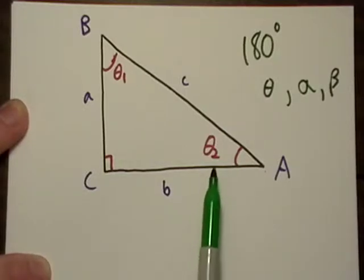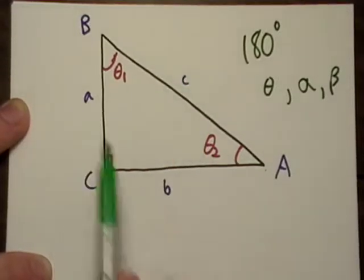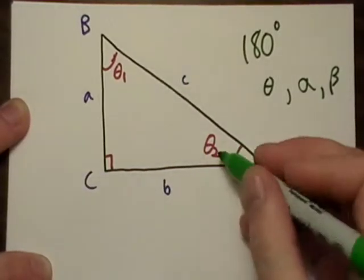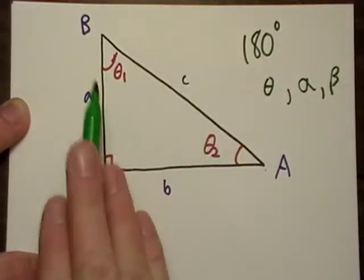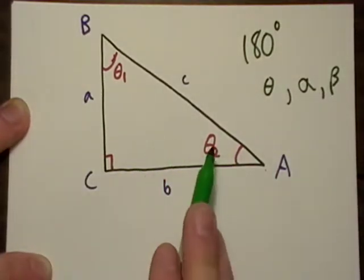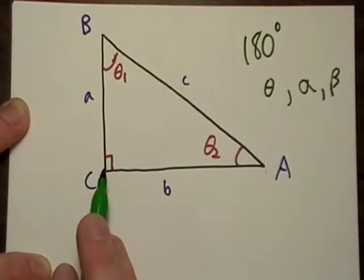Now let's talk about theta two and what they're going to talk about. There's different names for each of these sides, and they all depend on which angle you're talking about. The sides of a triangle are different with respect to theta two as they are to one or this right angle down here.